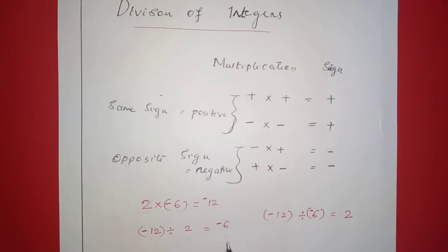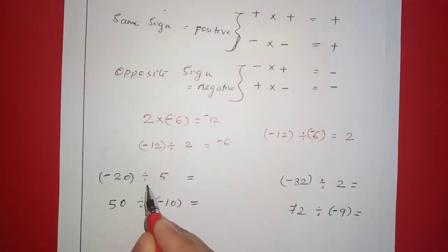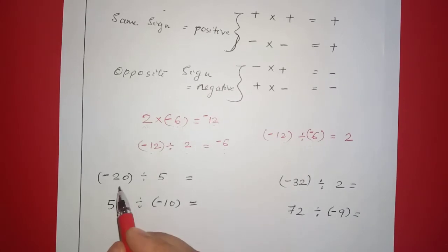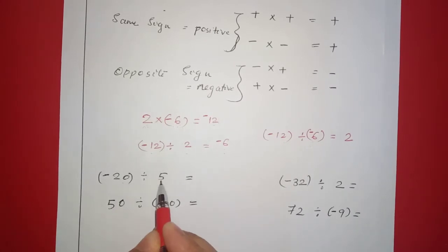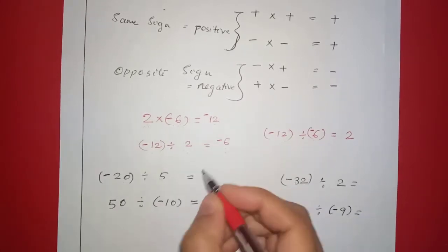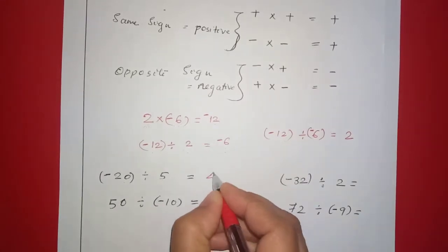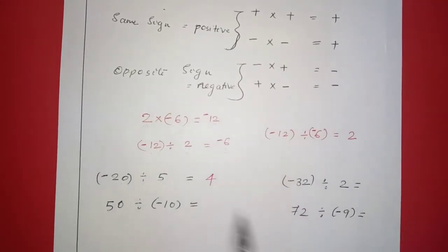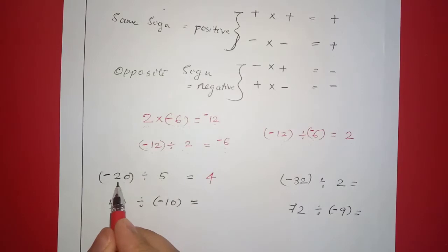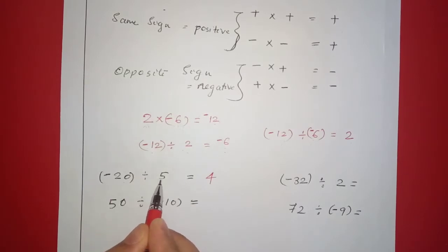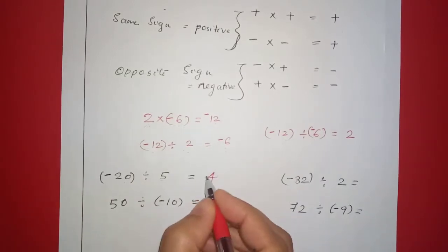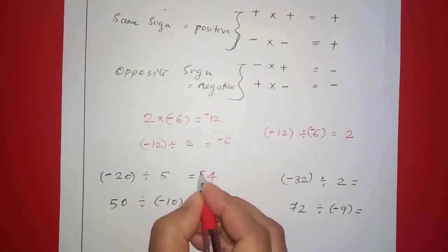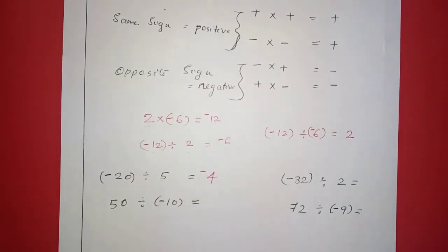For example, negative 20 divided by 5: we get the answer negative 4. The answer is positive; the answer is negative.